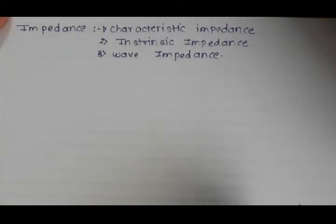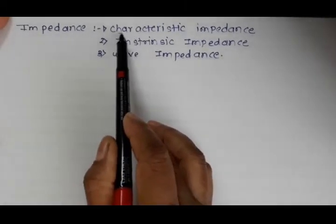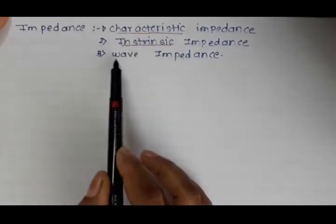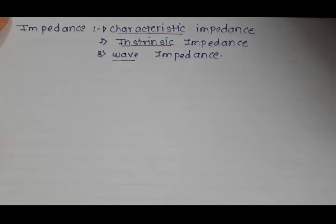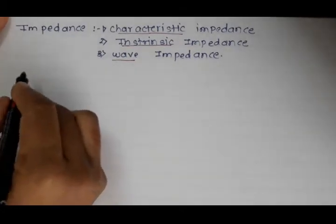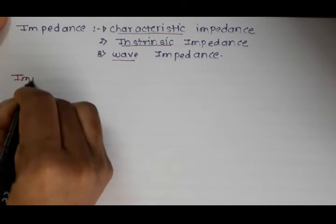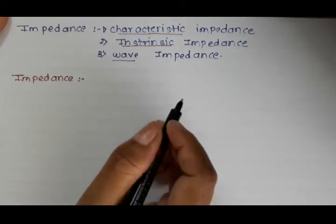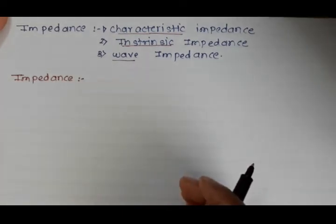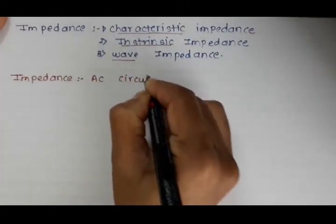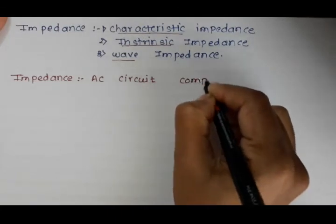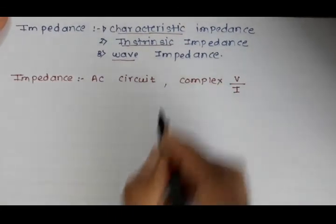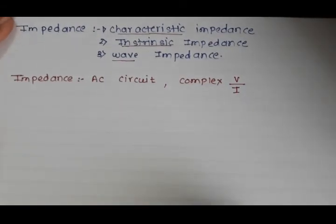Hello all. In today's session we are going to discuss about impedances. There are three types of impedances we are going to discuss: the first one is the characteristic impedance, the second one is the intrinsic impedance, and the third one is the wave impedance. Impedance is the term discovered by Oliver Heaviside in the 19th century for AC circuits, where the complex V/I ratio is called the impedance.